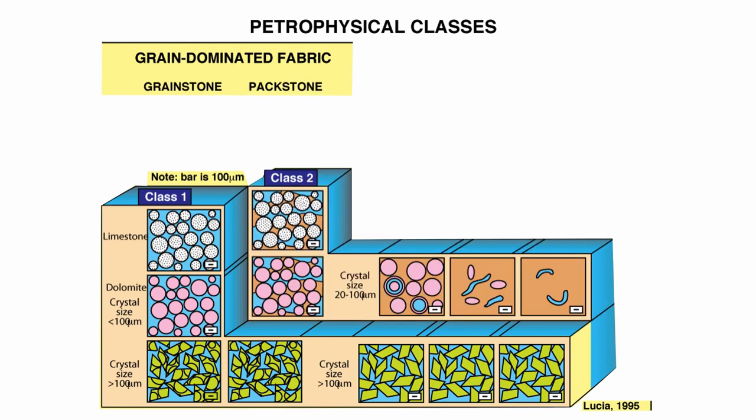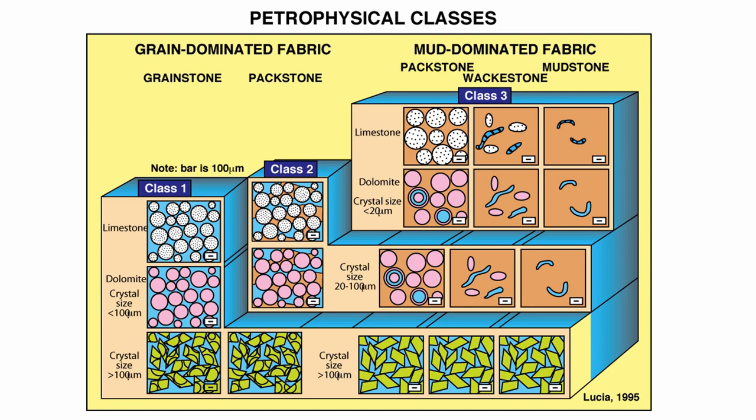Class 2 comprises the mud-lean pack stone, dolomite crystals with a size smaller than 100 microns, and dolomite with crystal size between 20 and 100 microns. Class 3 comprises all the rest, which are the muddy textures.